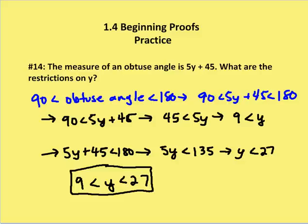So I can write an inequality as 90 degrees is less than the obtuse angle in question, which is less than 180 degrees.